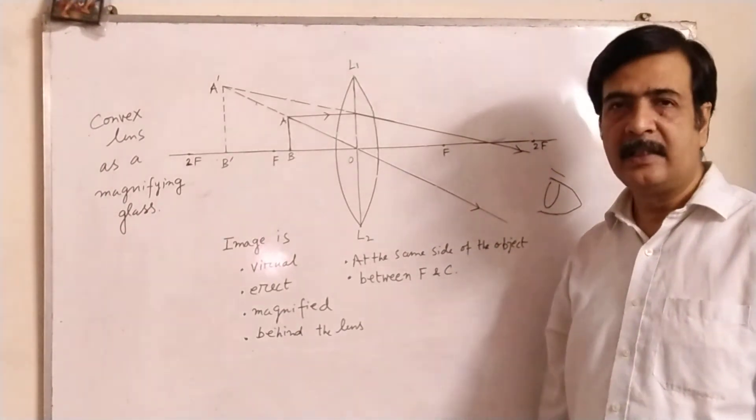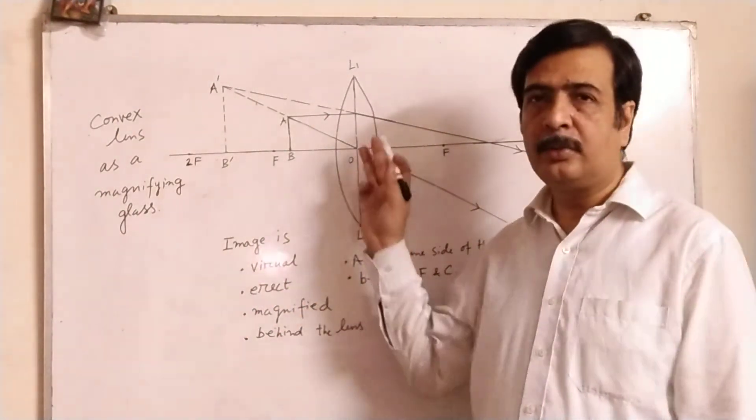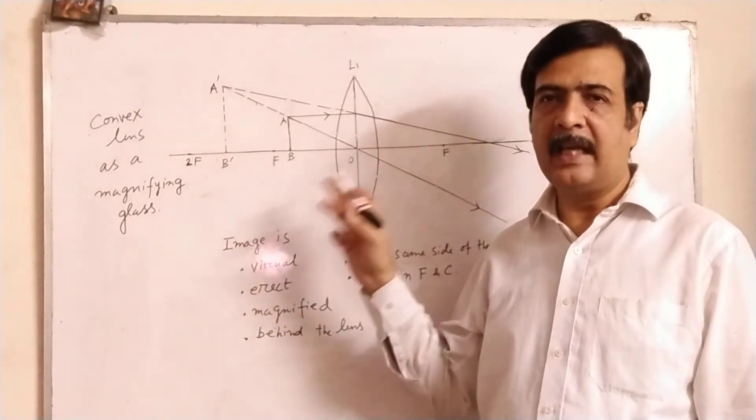That will be the position of the image. Hope you have understood this. Try to draw in this way, draw the proper ray diagram with arrow.